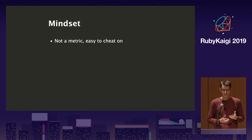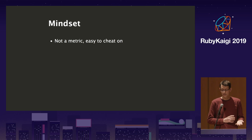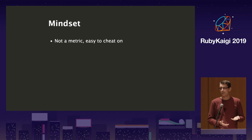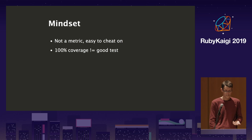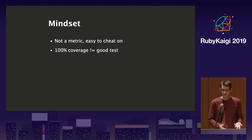The mindset for actionable code coverage: code coverage is not a metric. You can't use it as a metric because it's super easy to cheat — you can exploit `||=`, or write only unit tests that all pass without capturing the real use cases. You end up with 100% coverage but that doesn't mean your tests are any good. Your tests become like cement to your code — you can't change your code, but you have great coverage. That's not the goal.